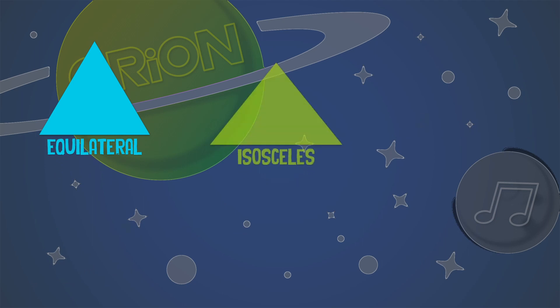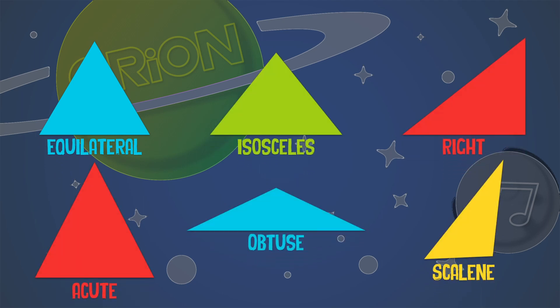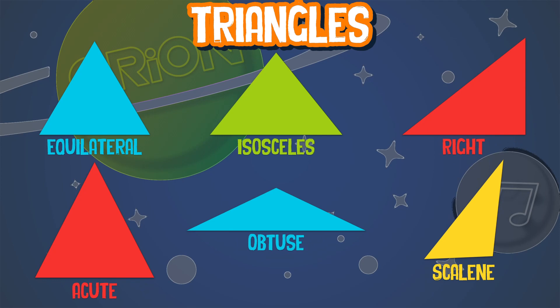Equilateral, isosceles, right, acute, obtuse, and scalene are all types of triangles, but what do they mean?